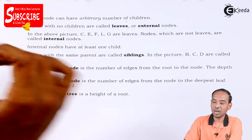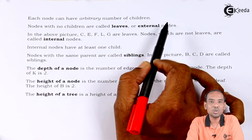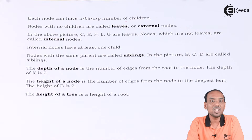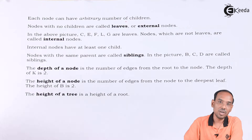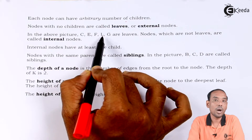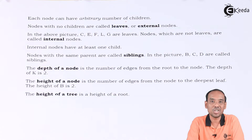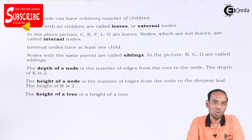Nodes with no children are called leaves or external nodes. There may be cases where a node doesn't have any child — that node would be termed as a leaf node or external node. In the above picture, nodes C, E, F, L, G are leaves because they do not have any child, or in other terms, no node is connected to them.